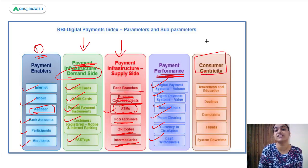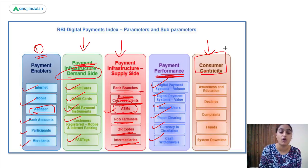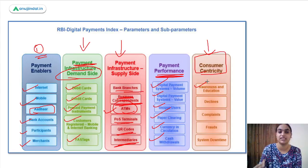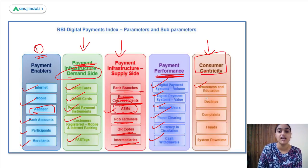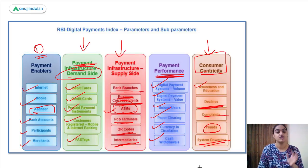The last parameter is consumer centricity. This covers how many consumers are aware of these systems, how many are able to use them, how much fraud is happening, how many cyber attacks are occurring, and how many customer grievances exist. It also includes how educated the customer is about digital payment systems, whether they are able to utilize them, system downtime, and whether transactions are being completed or declined.